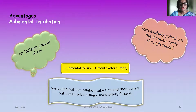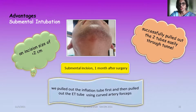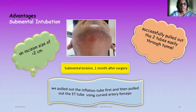This is a short and straightforward procedure. The incision size is less than 2 centimeters. Both tubes can be successfully pulled out through the tunnel, and this is a picture of the submental incision one month after surgery — a barely noticeable and nearly invisible scar, which is more promising compared to the tracheostomy tube scar.